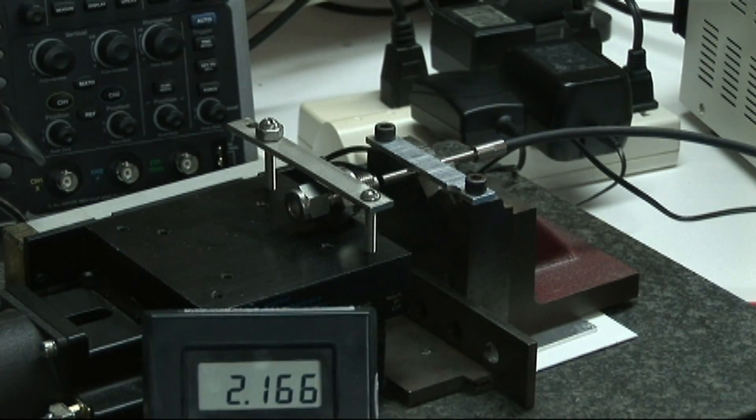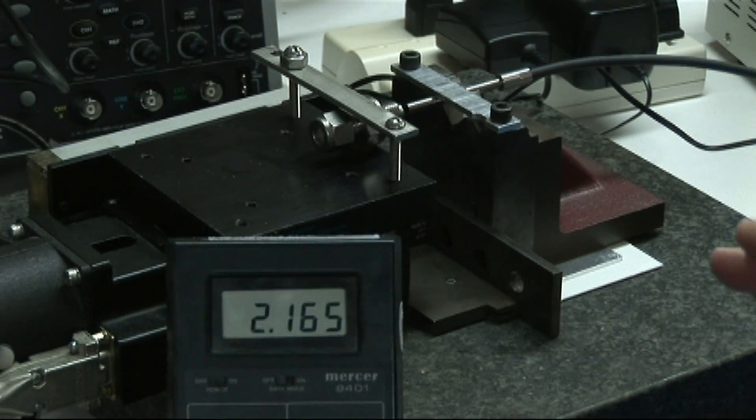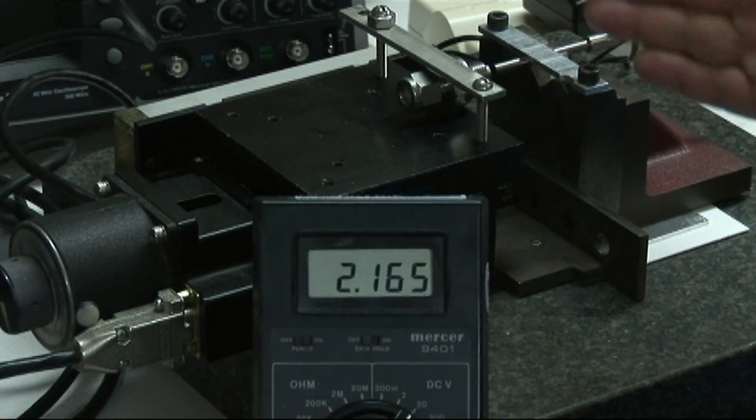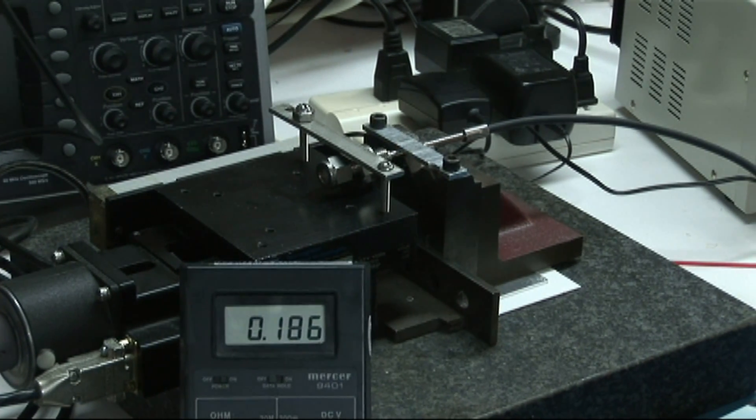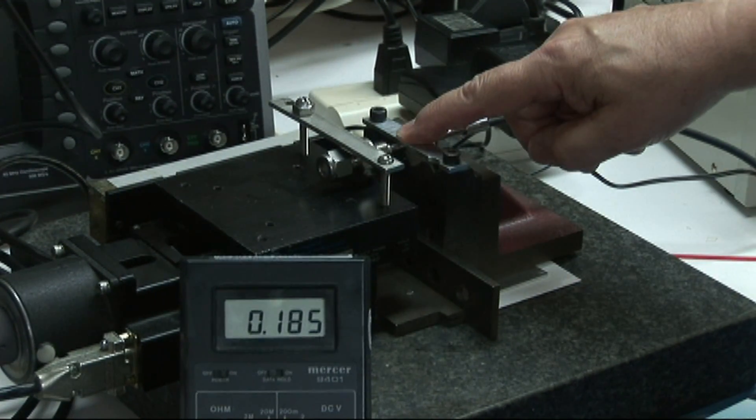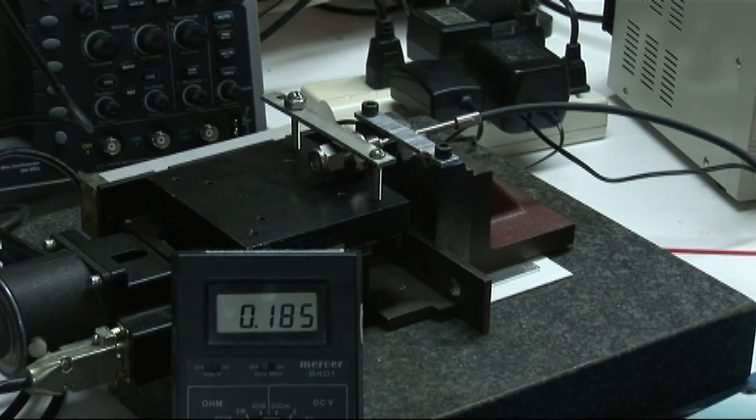Now, the way we run through a calibration, we have a control program that's going to bring the stage into contact with the target, and then pull it away in steps. Okay, so now we have the stage set up. We're in contact with the probe, and we're going to tell the computer to start running this calibration.